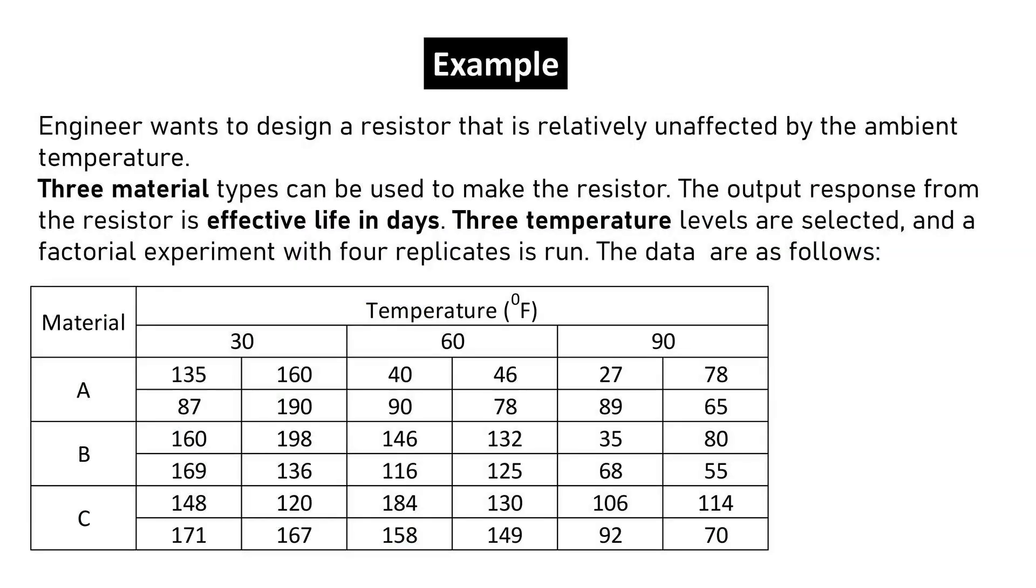Engineer wants to design a resistor that is relatively unaffected by the ambient temperature. Three material types can be used to make the resistor. The output response from the resistor is effective life in days. Three temperature levels are selected, and a factorial experiment with four replicates is run. The data are as follows.